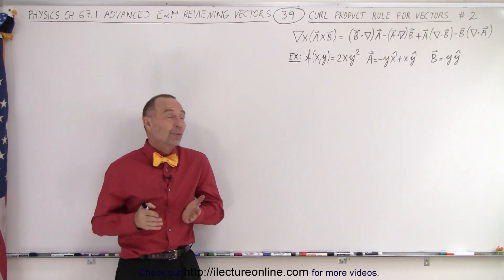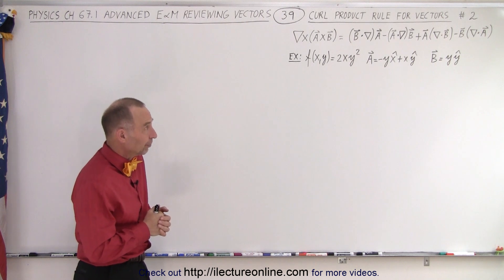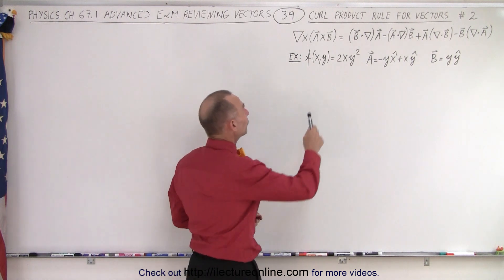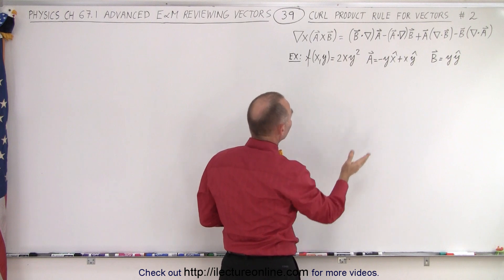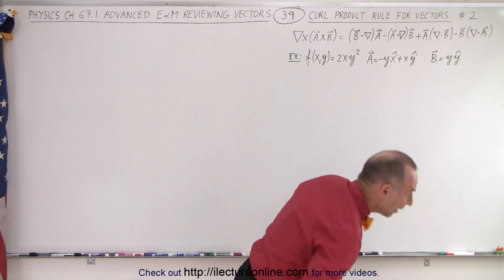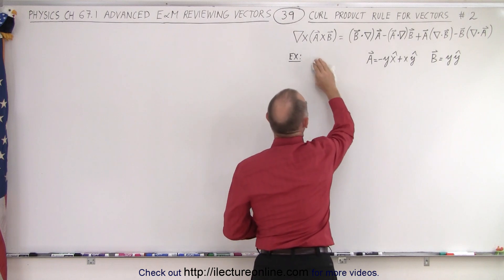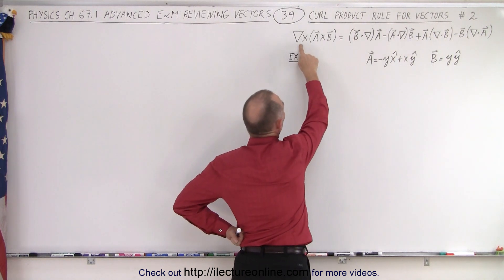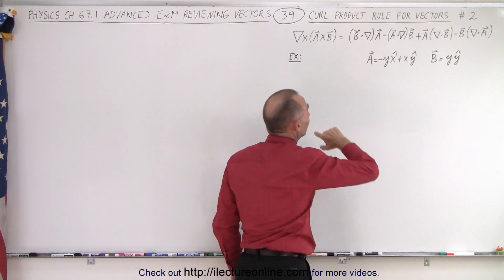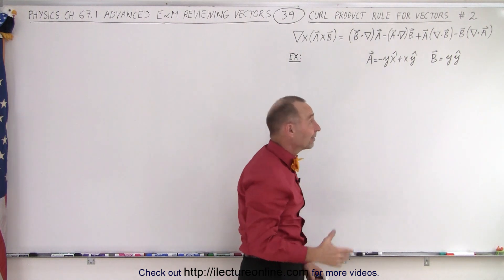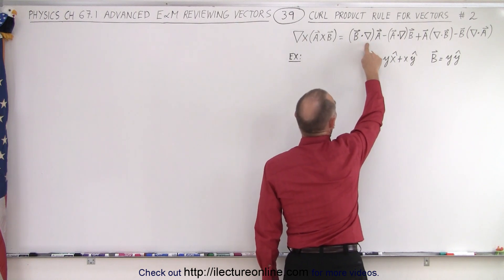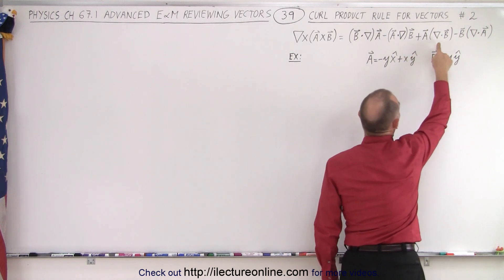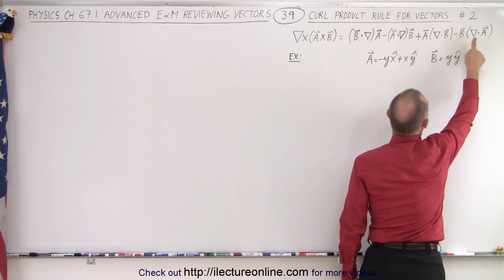Welcome to Electronline. Here before us we have the second curl product rule for vectors, and we're going to try to show that the rule is correct by doing a simple example. We just need the two vectors a and b. The curl of the cross product of a and b is equal to the whole expression on the right side: b dot del times a, minus a dot del times b, plus a times the divergence of b, minus b times the divergence of a.